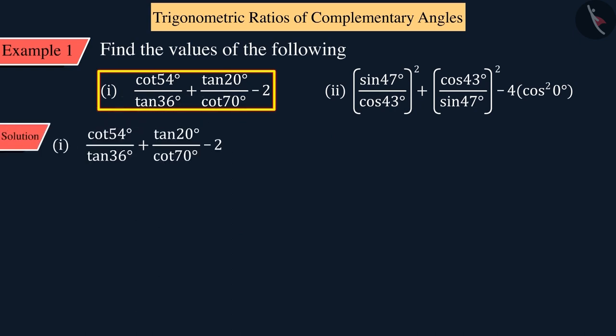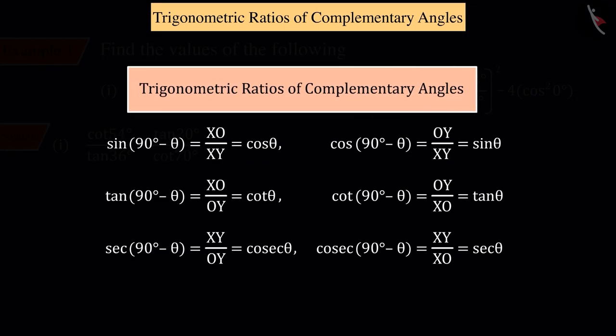We can see that the first term given is cot 54° upon tan 36°. Here 54 and 36 form a pair of complementary angles. Similarly, the second term also has a pair of complementary angles and the third term is minus 2. To solve this, we will use the trigonometric ratios of complementary angles.